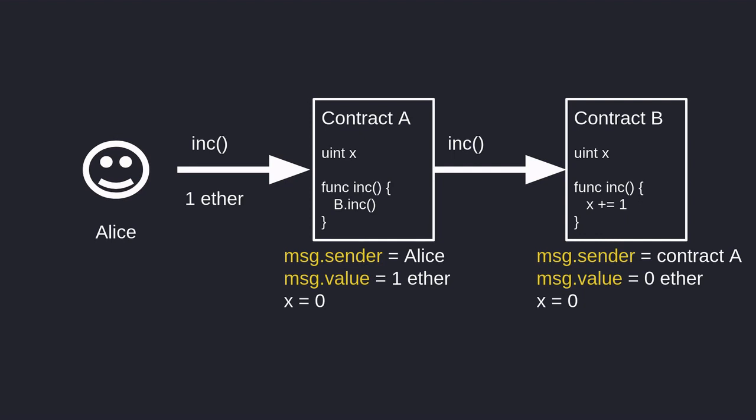From Contract A it calls the function increment inside Contract B. Inside Contract B, msg.sender will equal Contract A since Contract A is the address that called Contract B. msg.value will be zero ethers since Contract A did not send any ether to Contract B, and the initial value of the state variable x will be equal to zero. The function increment then updates the state variable x by one.